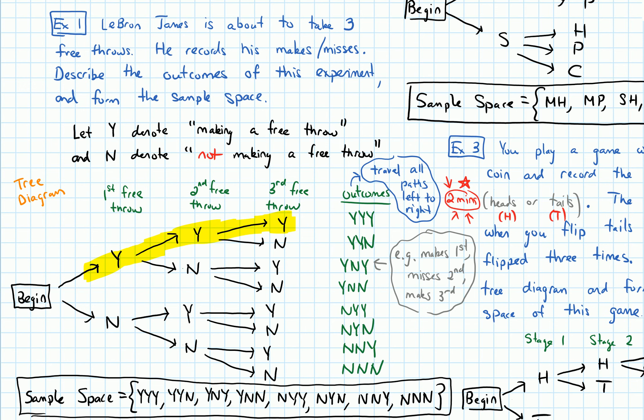So the reason why this comes out to be just multiplication on a more conceptual level is, if I think about the tree diagram, at each step, like going from the first free throw to the second free throw, each of the outcomes gets split up into the same number of branches. Like the Y here gets split up into two branches, one going to a Y, one going to an N.